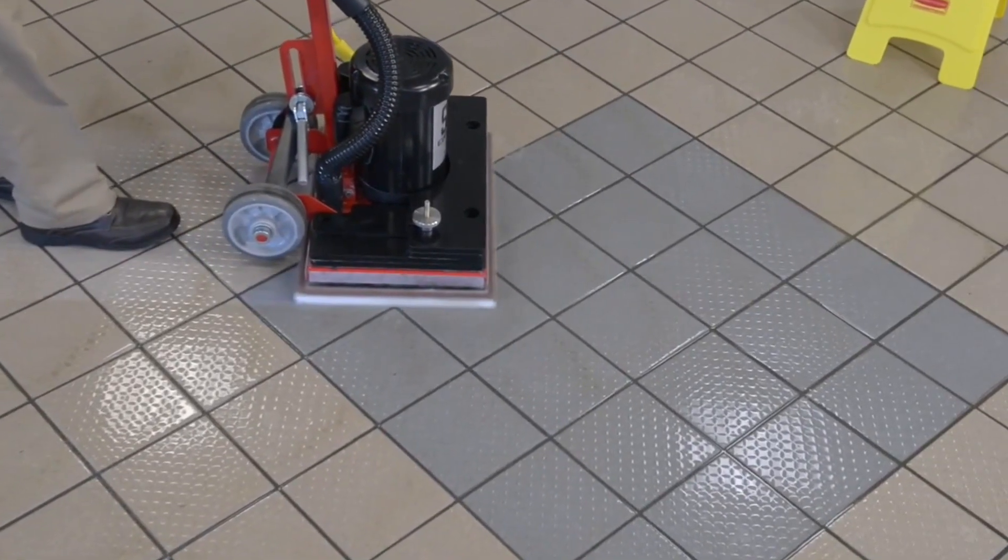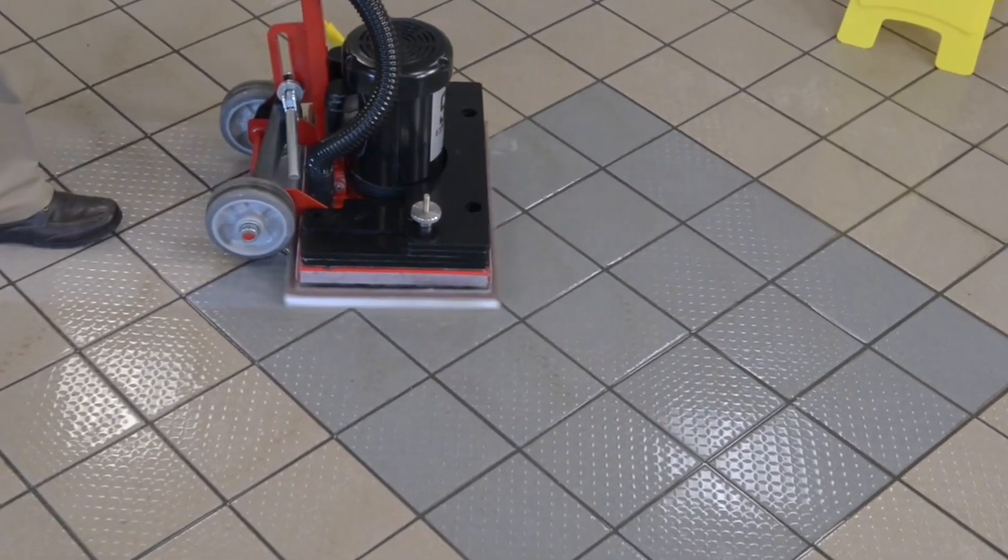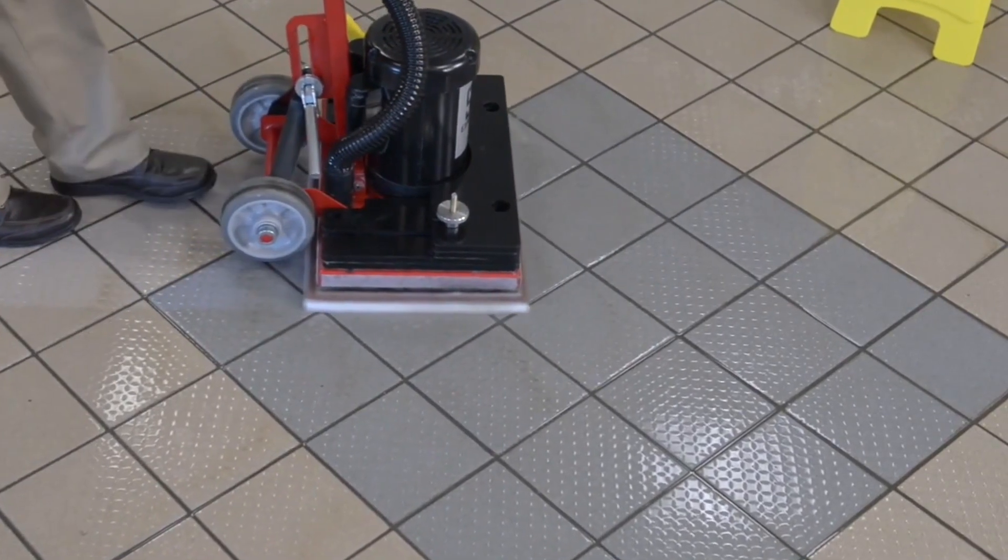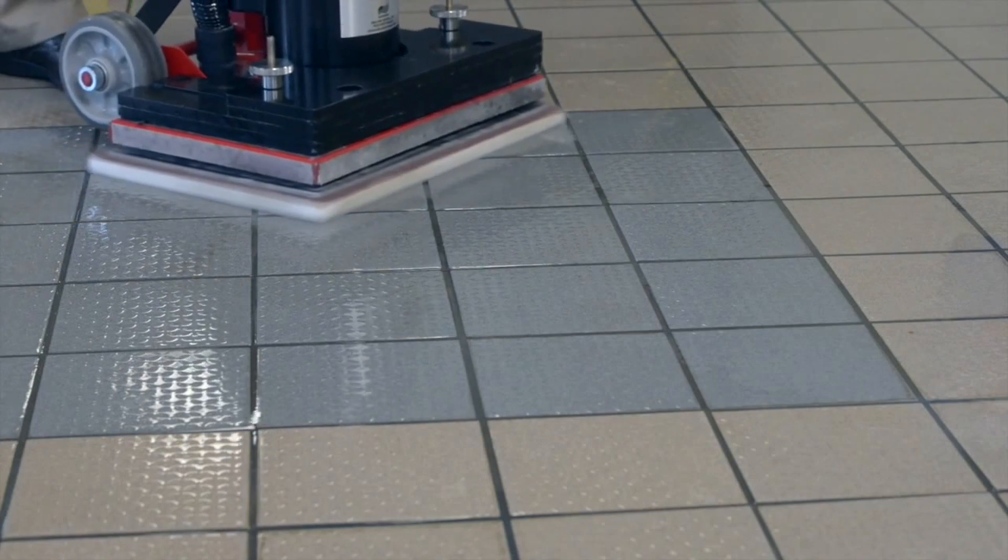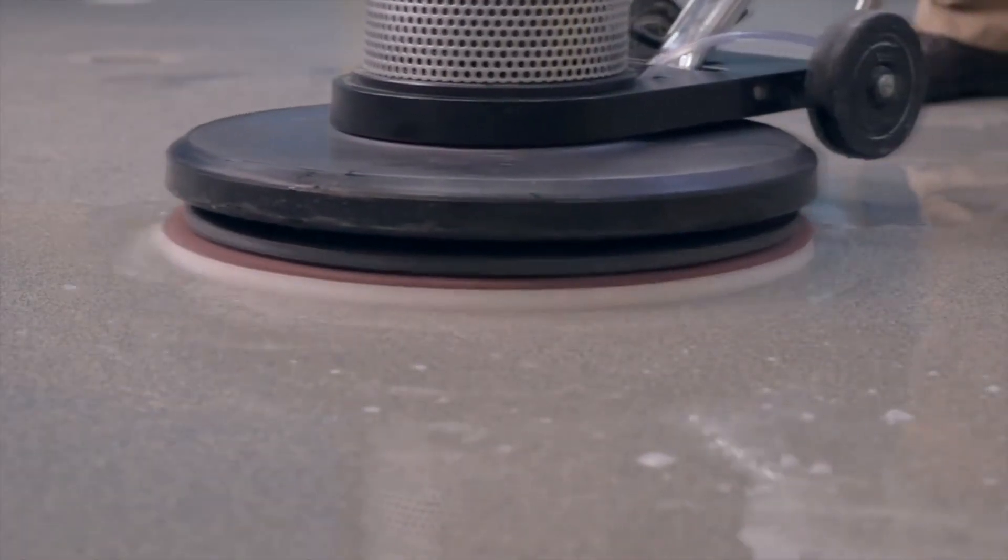Slowly guide the machine in steady passes. Ensure that the entire surface is saturated with water or neutral cleaner. Remember to always keep the floor and pad wet. The movement of the Extract pad causes friction resulting in the removal of soiled, hard to clean areas.